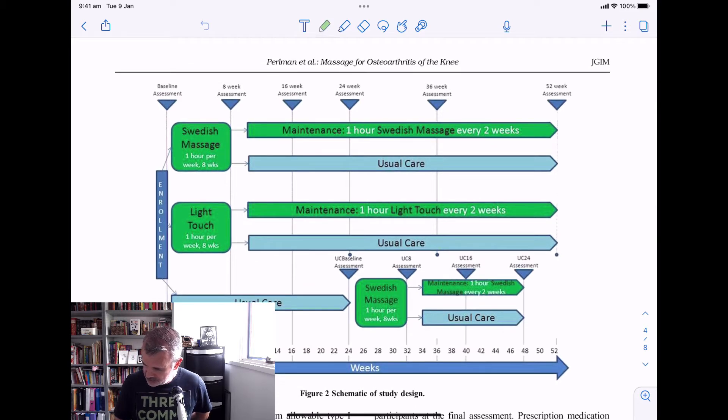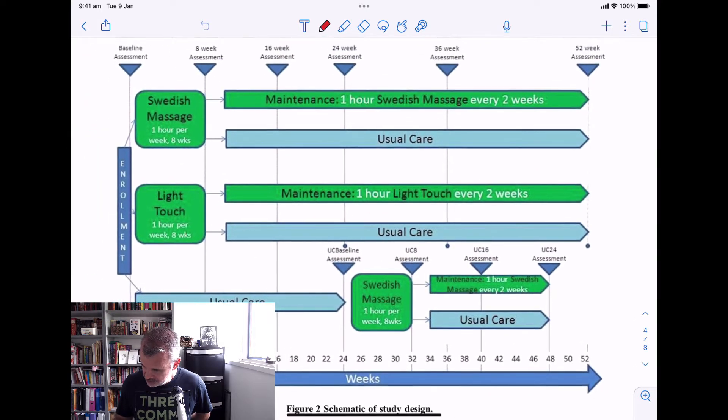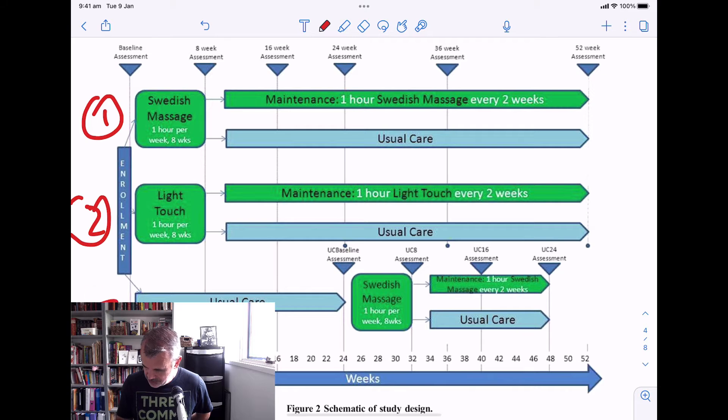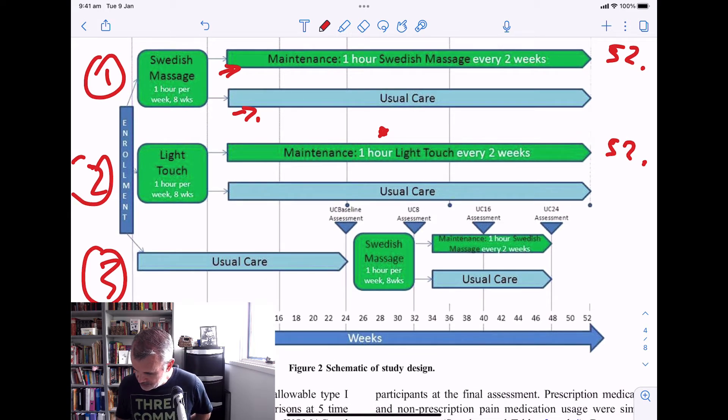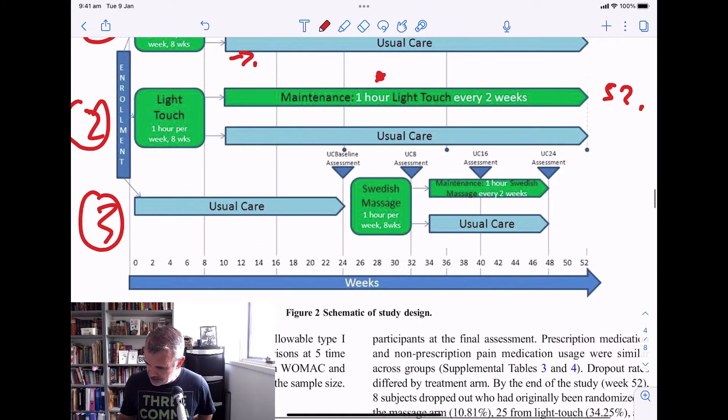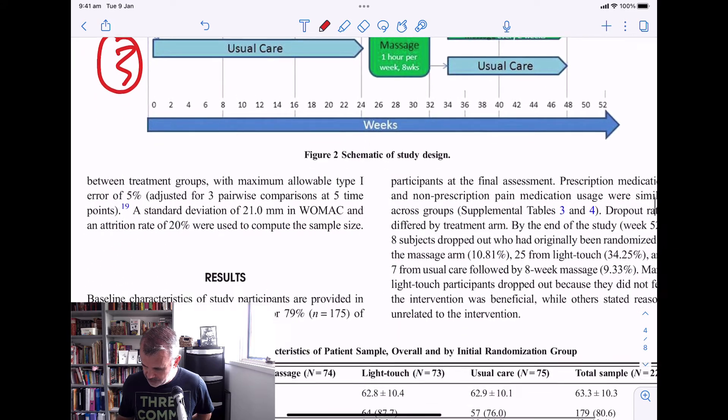So they got all the results. Here's a nice little flowchart. So three different groups. One, two, three. So we had Swedish massage for an hour for eight weeks. One hour per week for eight weeks. And then they either went into maintenance. So they went into maintenance for one hour Swedish massage every two weeks for 52 weeks. It would have been good to be in that group. Or they just had the Swedish massage once a week for eight weeks and then went into usual care, which was nothing at all. They did either that or light touch one hour per week for eight weeks. Light touch was basically no manual therapy. It was just sort of hands-on talking. And then they did maintenance of light touch for every two weeks for 52 weeks. And that would have been a nightmare. Or they just went into usual care. Or their group started into usual care. And then 26 weeks in, they did the Swedish massage then. And then went into usual care or one hour of Swedish massage.